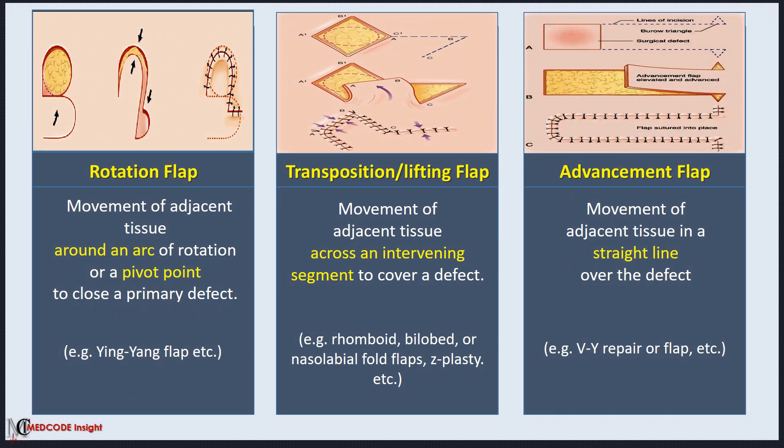There are three basic types of tissue movement: rotation, transposition, and advancement. Rotation flaps involve the movement of adjacent tissue around an arc of rotation or a pivot point, also called a yin-yang flap. Transposition flaps involve the movement of tissue across an intervening segment to cover a defect, also referred to as rhomboid, bilobed, and nasolabial fold flaps. In advancement flaps, tissue is moved in a straight line over a defect, also known as V-Y or W-plasty repair. These are all key terms you must know when coding for tissue movement.